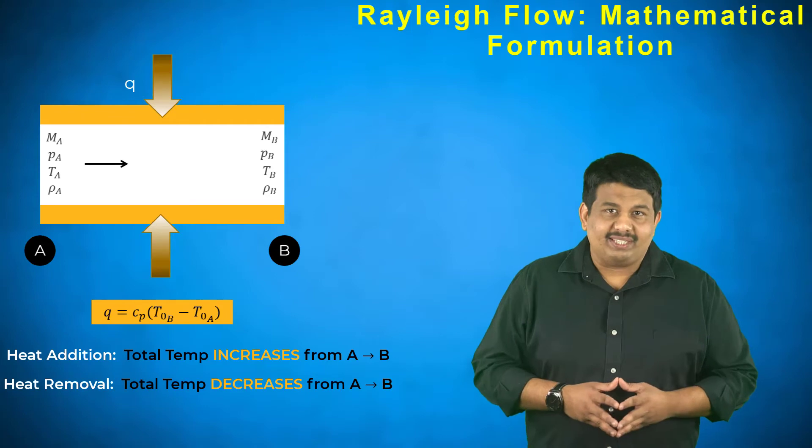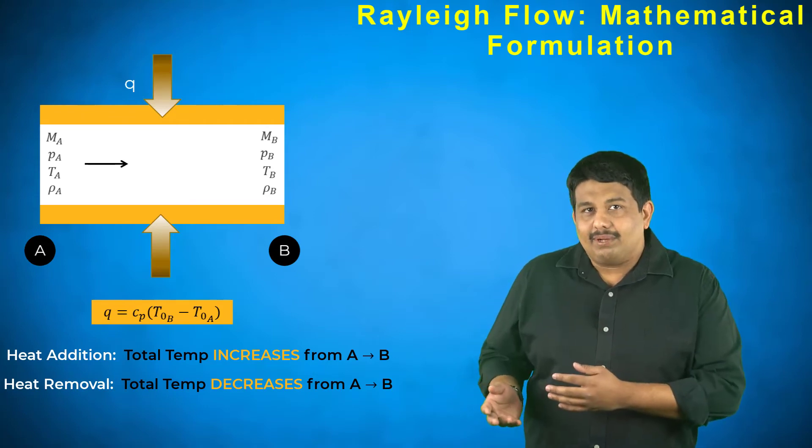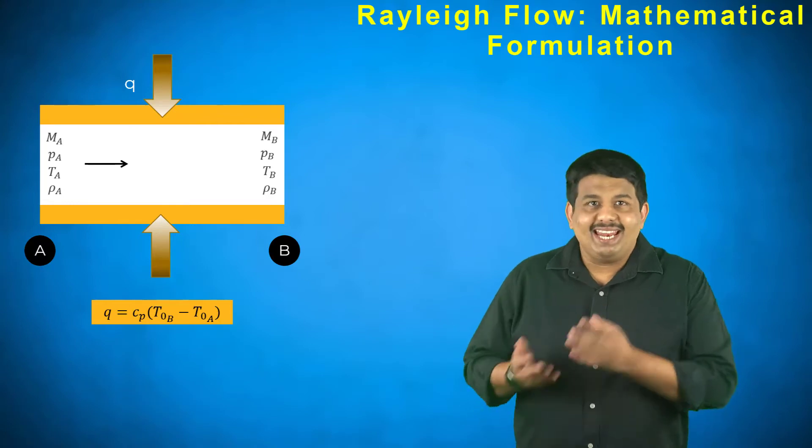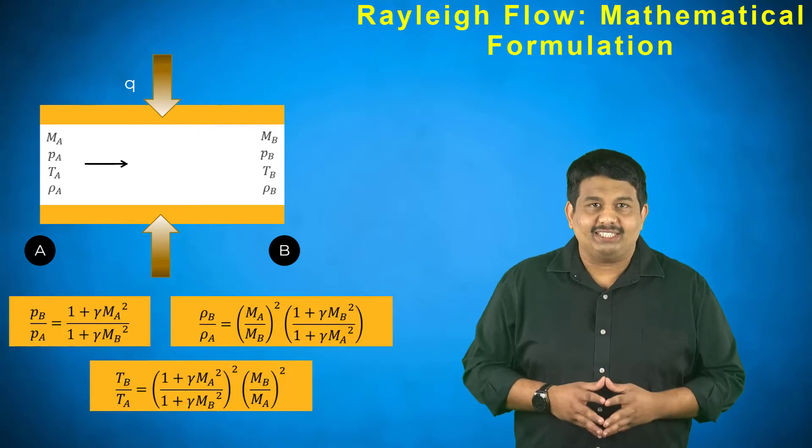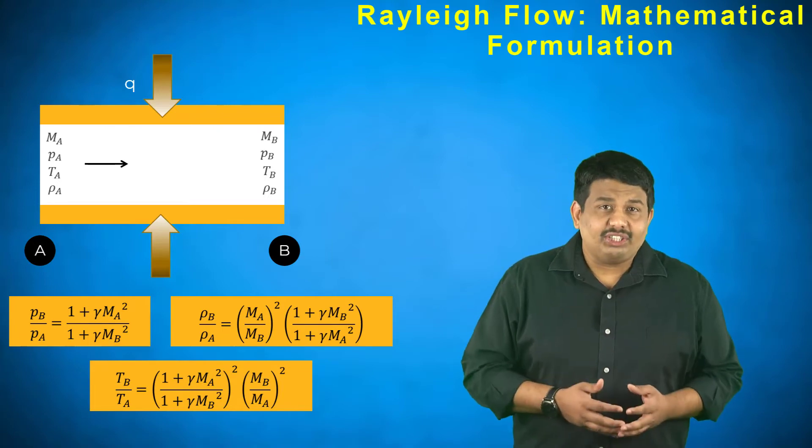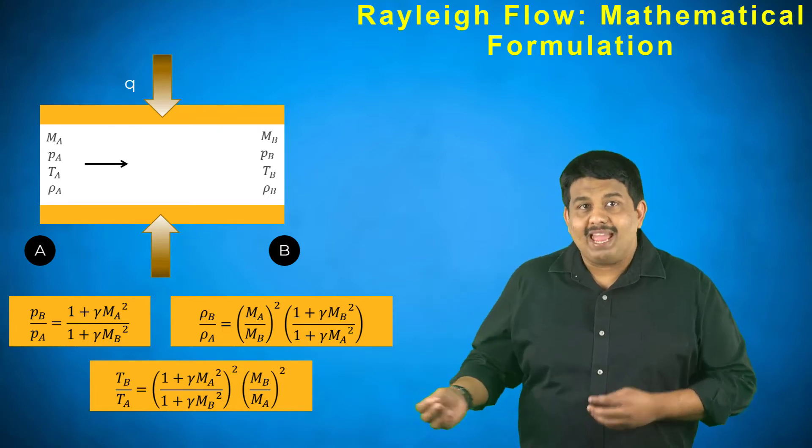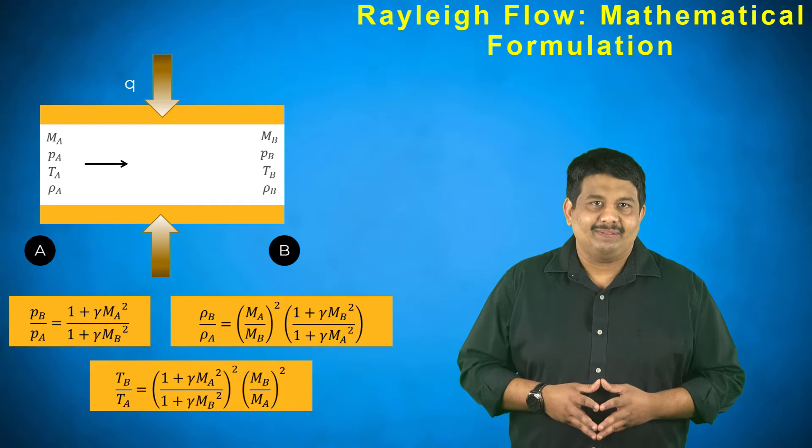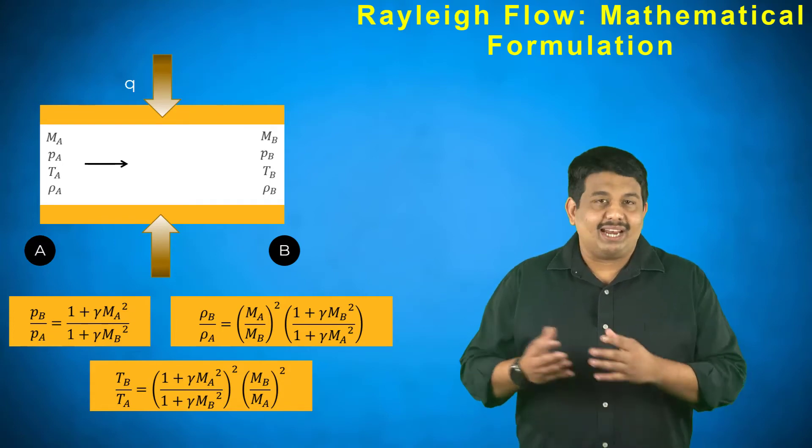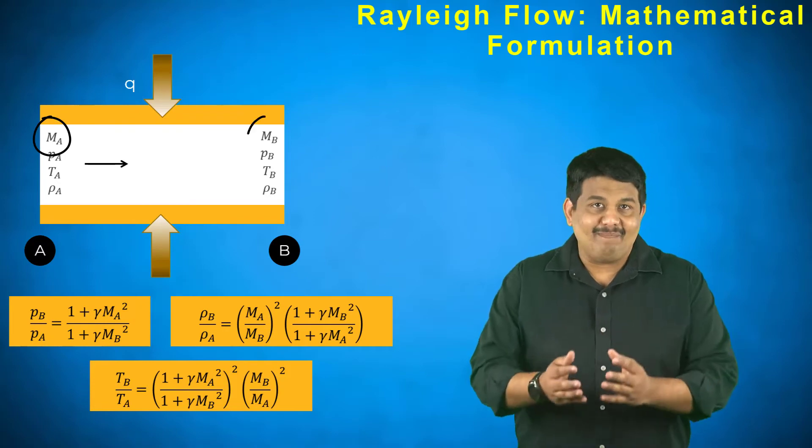Using the governing equations, the Mach number and the speed of sound definitions, we obtain the ratio of flow properties between the points A and B as a function of both upstream and downstream Mach numbers. These upstream and downstream Mach numbers are denoted by MA and MB respectively.